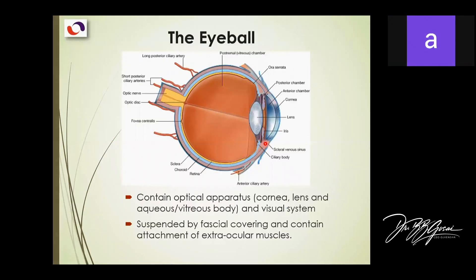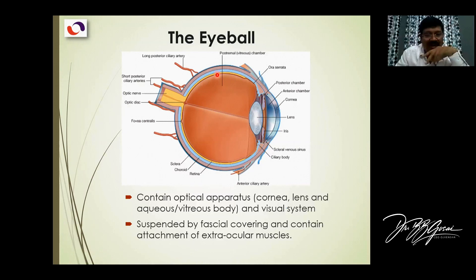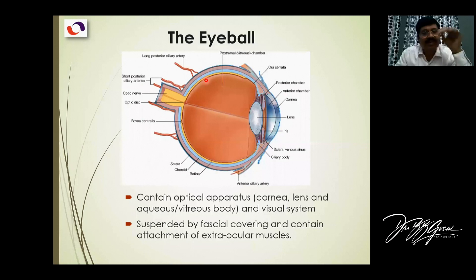The nervous layer is the retina, shown here in yellow. It has two parts: the pigment layer and the nervous layer. So that is the retina. This is what the three coats of the eyeball look like.